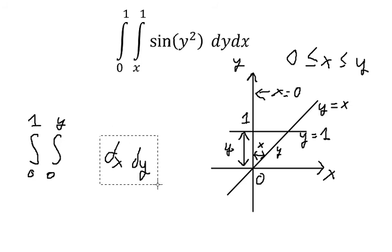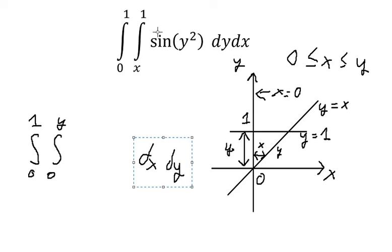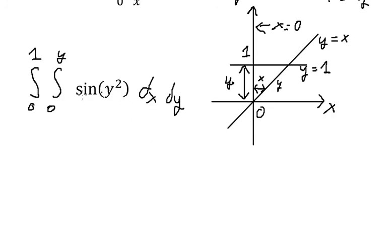And then we write the same function going in here. Now we just calculate about this double integral. So dx, we don't have x, that means we just have this x in here, sine of y squared.